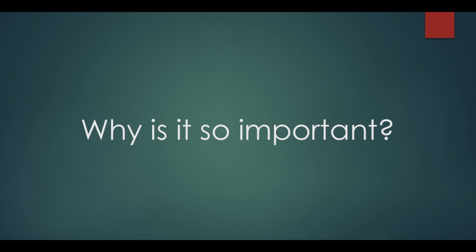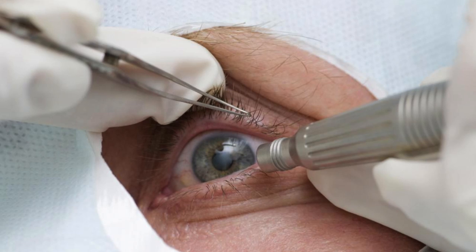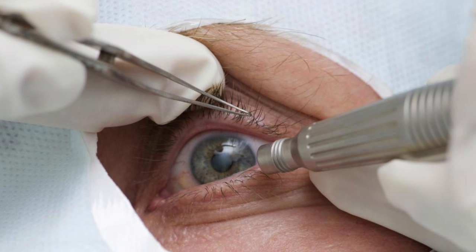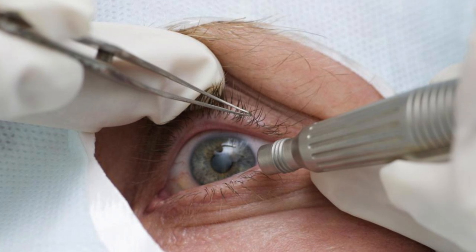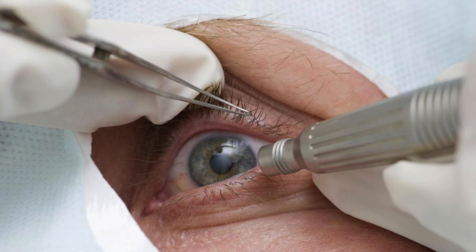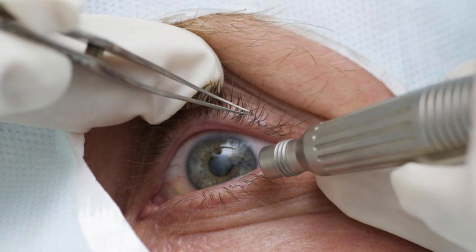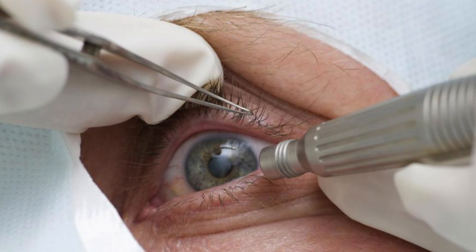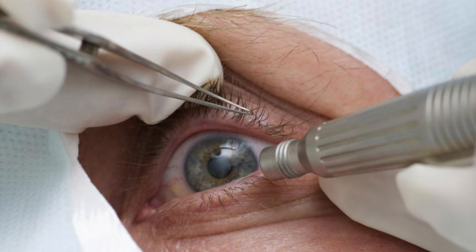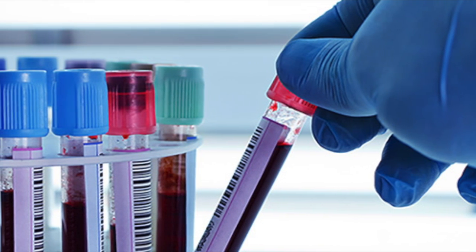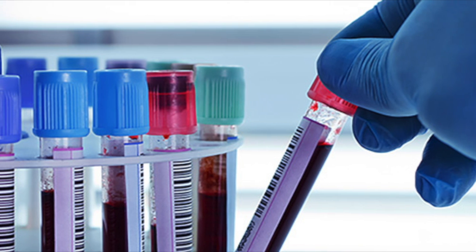Why is ocular immune privilege so important? This mechanism has many implications. One of the main risks in transplantation is the risk of tissue rejection by the immune system. Because of ocular immune privilege, allografts are protected against the body's rejection of transplantation tissue. If we understand more about the molecules and mechanisms involved, these molecules could be applied to different areas of the body, extend the survival of all allografts universally, and even suppress autoimmune disease.